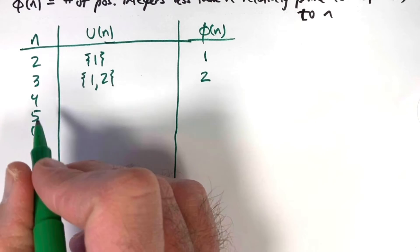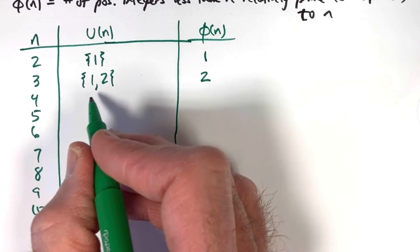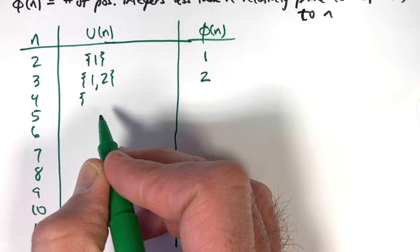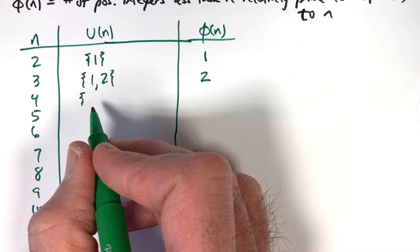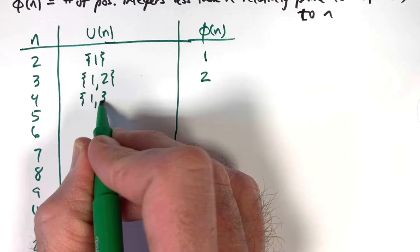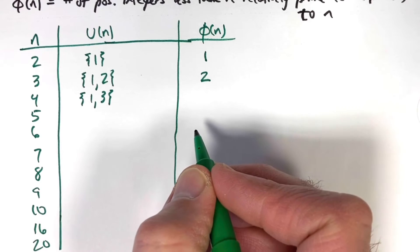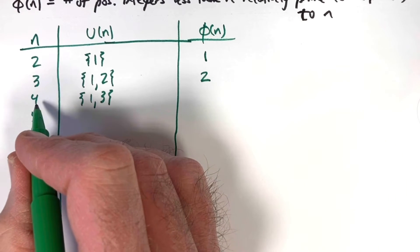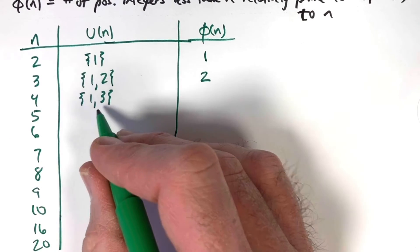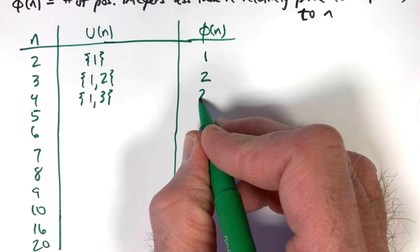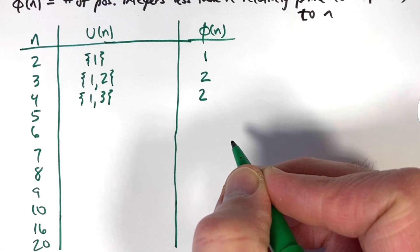In fact, it does not happen in the next case. When n = 4, what are the positive integers less than 4 that are relatively prime to 4? 1 and 3. Those are the ones that do not have 2 as a prime factor. 4 is 2². How many numbers are there? Two of them. So φ(4) = 2.